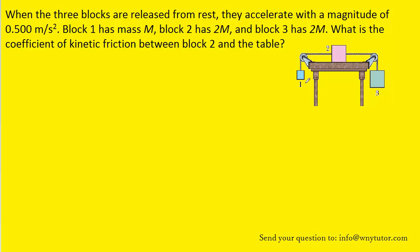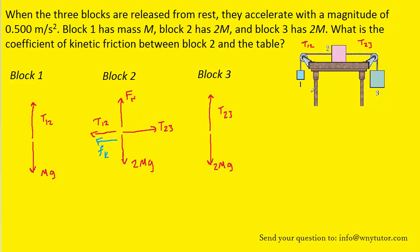What we need to do is draw a free body diagram for each of the three blocks. Before evaluating each of the three free body diagrams, note that we've called the tension in the rope that connects block one to block two T12, and the tension that connects block two to block three as T23.